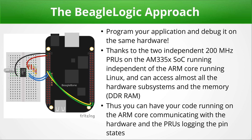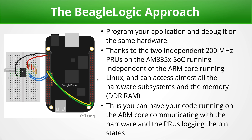The PRUs run independent of the ARM core which is running Linux, and have access to almost all the hardware on board as well as the system memory. Thus, user code can be executing on the ARM core while the PRUs continue logging the pin states in the background — and that's how BeagleLogic is made possible. BeagleLogic can also be used to debug any digital circuit, but you'd have to be careful of the logic levels lest you damage your BeagleBone Black.